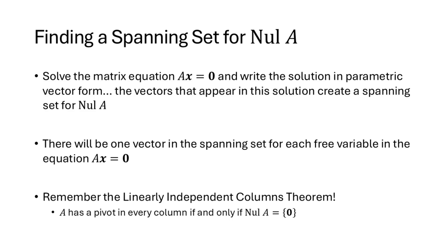That's the general solution process: to find a spanning set for the null space, solve Ax = 0, write the solution in parametric vector form, and those vectors span the null space of A. There will be one vector in the spanning set for each free variable in Ax = 0. Keep in mind the linearly independent columns theorem: A has a pivot in every column if and only if the null space of A equals the set containing only the zero vector — meaning no free variables means the null space is trivial.